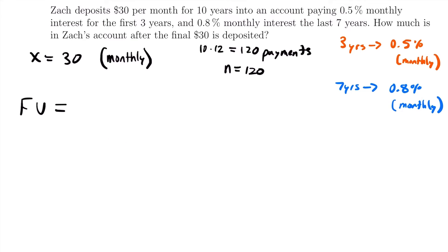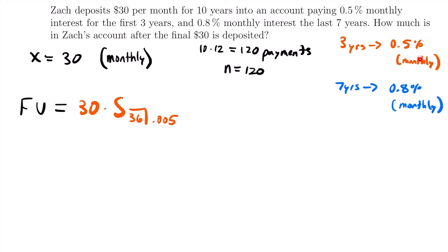For the first three years, we're still making payments of $30 multiplied by this notation. How many payments N are we making in those first three years? Since we're making $30 monthly and there are 12 months in a year, three years gives 36 months, so N equals 36. The interest rate is 0.5%, which equals 0.005 in decimal form. This gives the future value of the $30 payments made for the first three years at this interest rate.